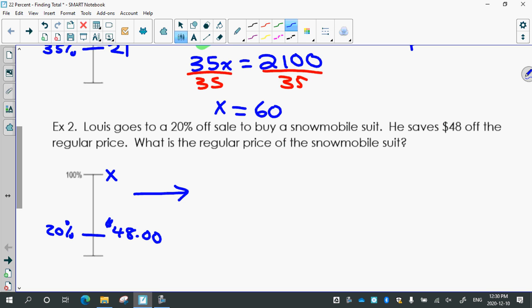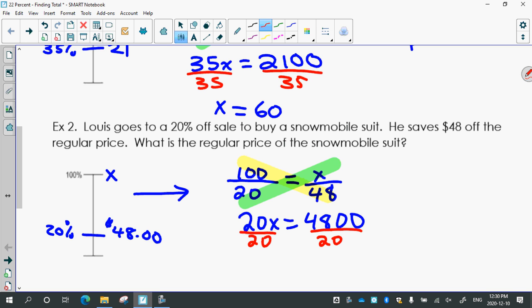Once you've got your whisker diagram figured out, you just convert it into a proportion. Then you can solve it by cross multiplying. So 20x this time equals $4800. Divide by 20.